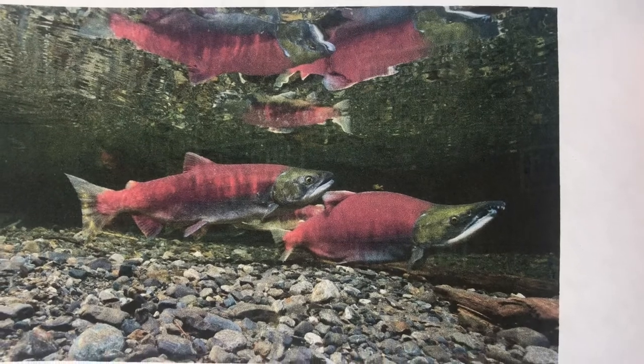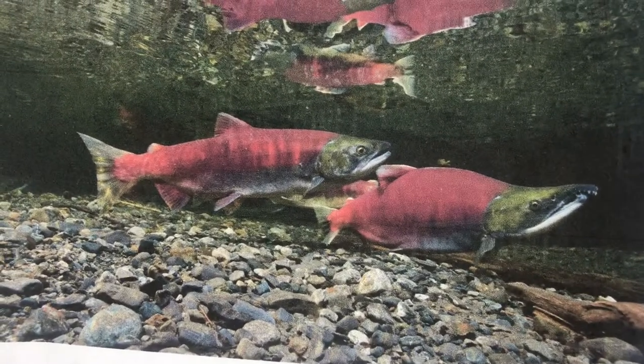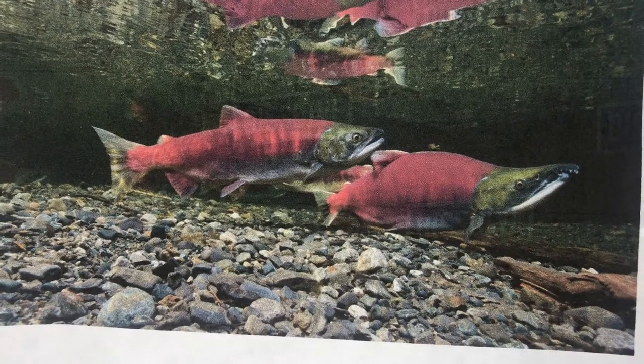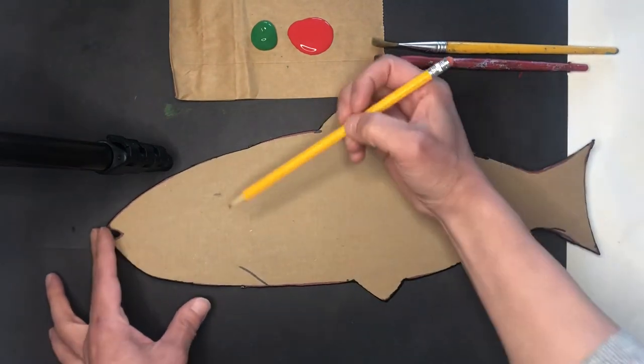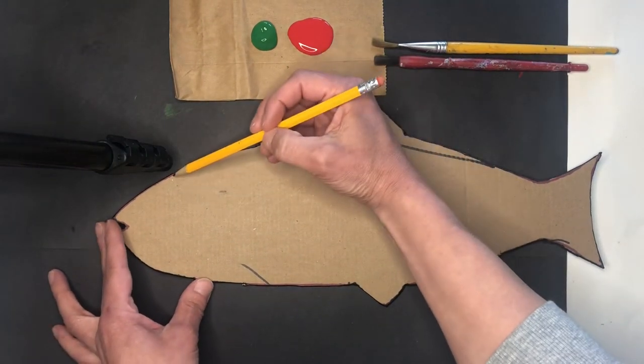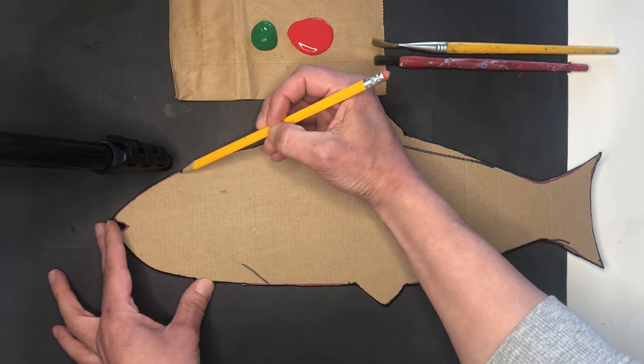We are going to draw some lines to show us where we want the different colors of paint to be. So it's mostly just the head and tail that have some green on it. So I'm going to draw a line just for myself to see while I'm painting, just to know where I want to stop.